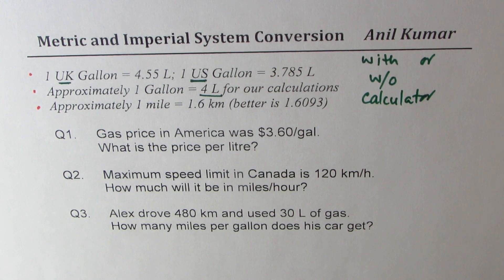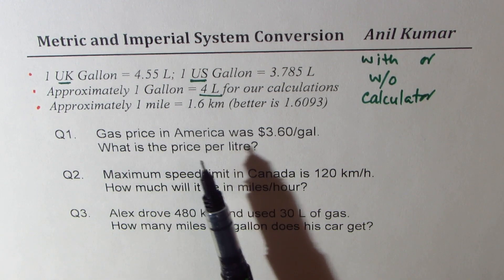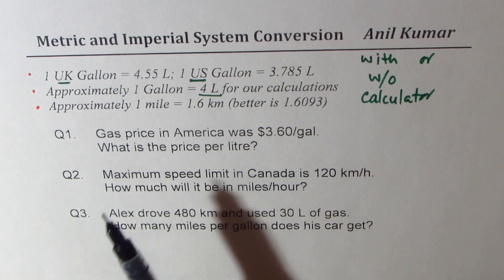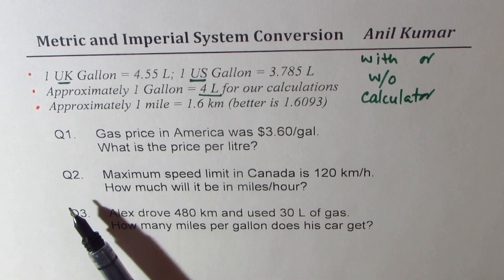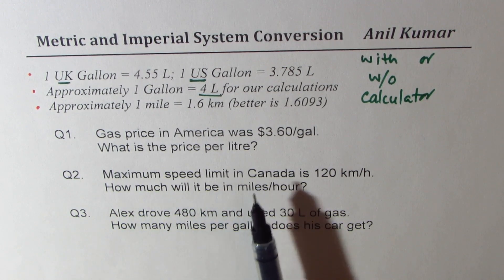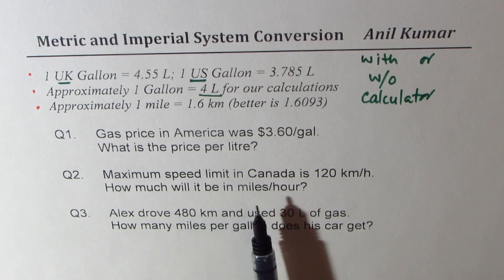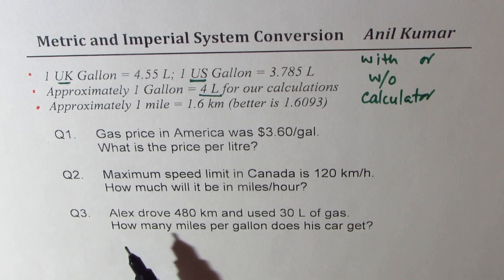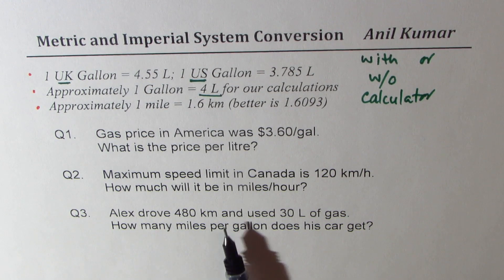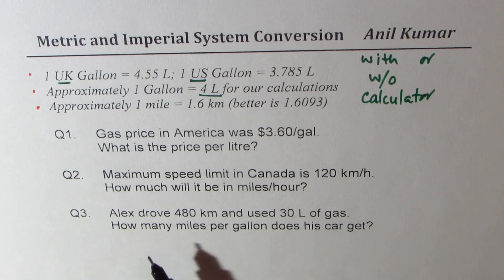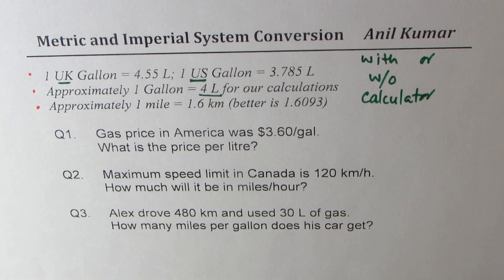We'll begin with very simple examples — three questions. You can actually pause the video, answer these questions, and match the solution. Question 1: gas price in America was $3.60 per gallon — what is the price per liter? Question 2: the maximum speed limit in Canada is 120 kilometers per hour — how much will it be in miles per hour? Question 3: Alex drove 480 kilometers and used 30 liters of gas — how many miles per gallon does his car get? These are very standard questions which you can see many times. Let's see how to solve them.